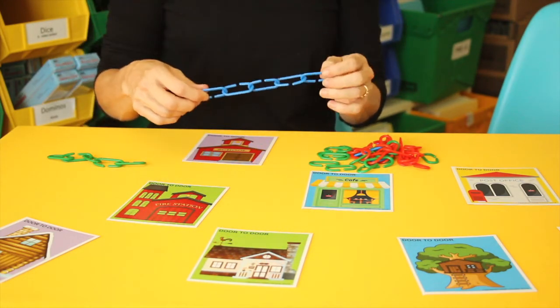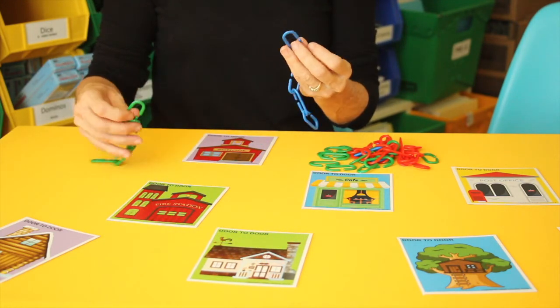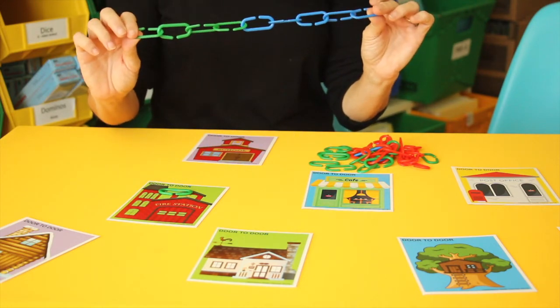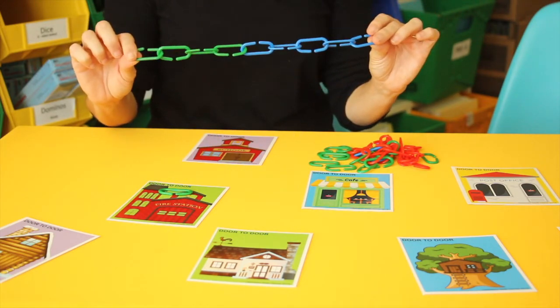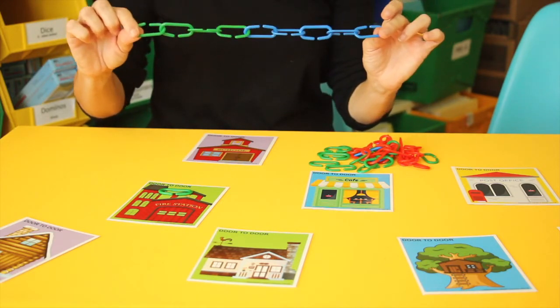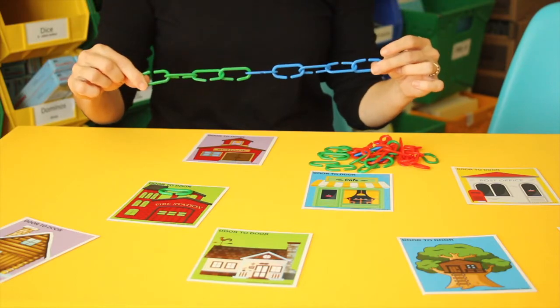As the students do this, you might want to give them a tip on putting the chains into a pattern so that they can count by skip counting. So this one would be five, so they're going to count by multiples of five. It just helps them with their number sense.